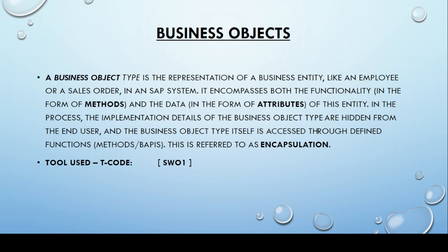All business objects are accessed through BAPIs — this is called encapsulation. In this way we hide the business logic from the data. If a non-SAP system wants some data, it can get it very easily, but it will not have access to the business logic used in the SAP system. The T-code SW01 is used for exploring and maintenance of business objects.